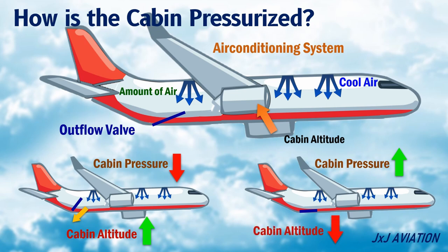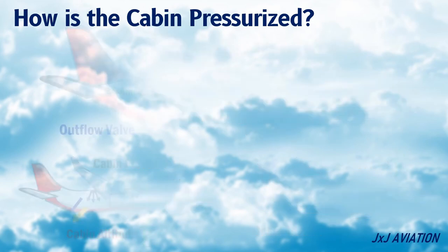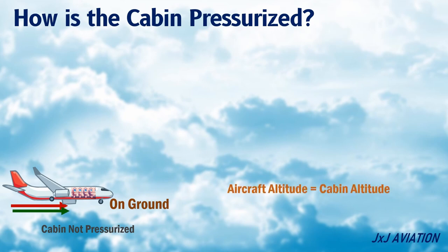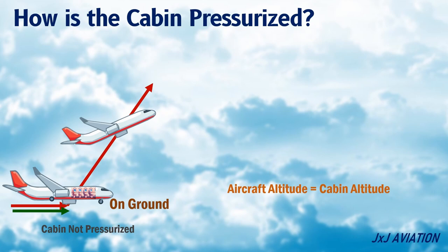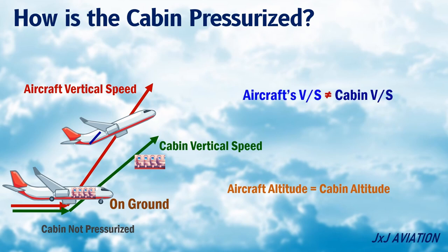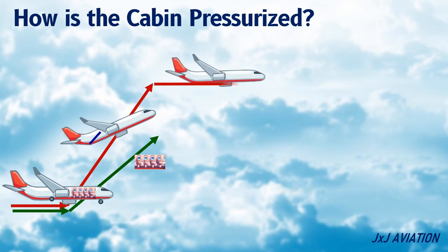The cabin altitude is adjusted as per the flight phase using the outflow valve. When the aircraft is on the ground and the doors are open, the cabin is not pressurized — the aircraft altitude and the cabin altitude are the same. When the aircraft takes off, the aircraft altitude increases and the cabin altitude is also allowed to increase by opening the outflow valve slightly. The rate of increase of the aircraft is the aircraft's vertical speed, and the rate of increase of the cabin altitude is called the cabin vertical speed. When the aircraft levels off at its cruise altitude, the cabin altitude will also level off at a maximum of 8000 feet.